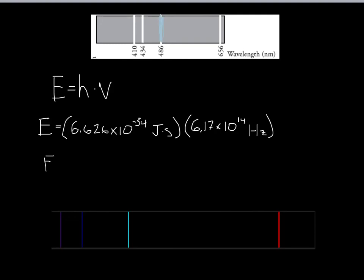Good calculator skills are going to be important for this unit. When you do that calculation, you should get 4.09 times 10 to the negative 19th joules. That tells us the energy of a single photon of that particular wavelength — a very small number because it's a very small piece of light.